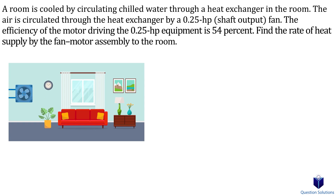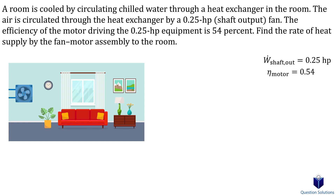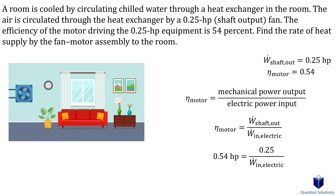Let's look at an example. We have a room cooled by circulating cold water through a heat exchanger, with air circulated by a 0.25 horsepower fan. The efficiency of this fan motor is 54%. We need to figure out how much heat is being added to the room due to the fan. All the electrical energy consumed by the motor — including the shaft power — is dissipated as heat, so we're really looking for the total electric power the motor consumes. Note that the 0.25 horsepower is shaft output.